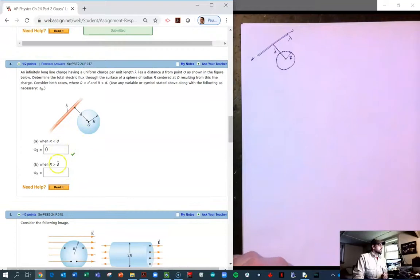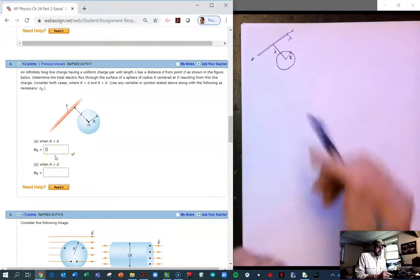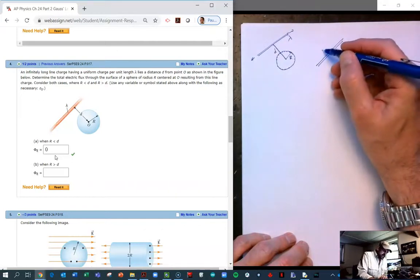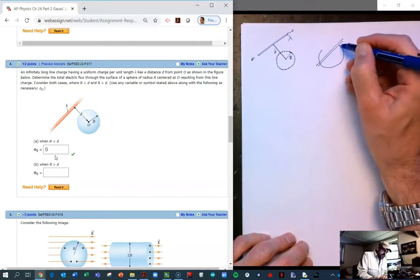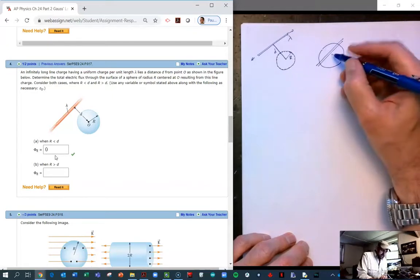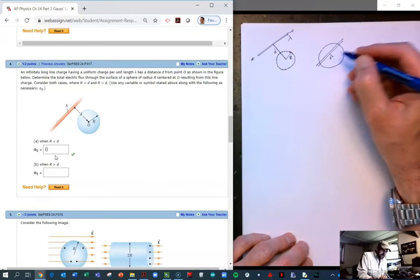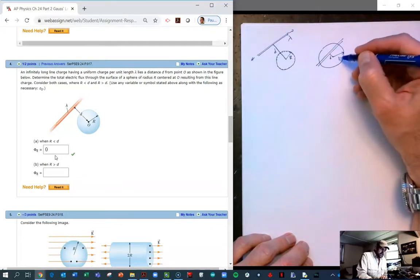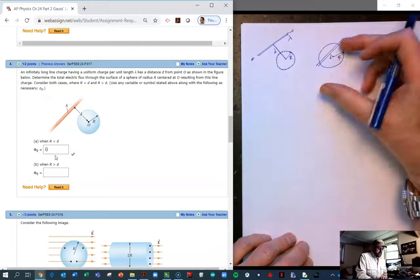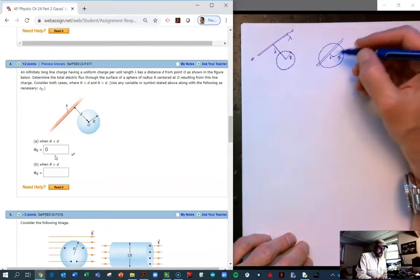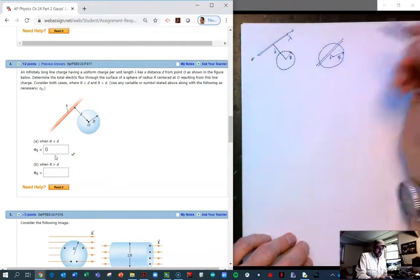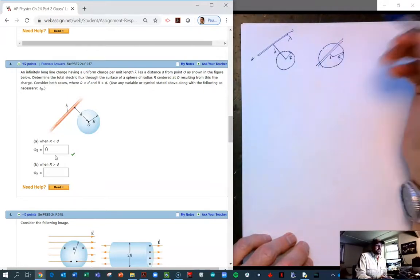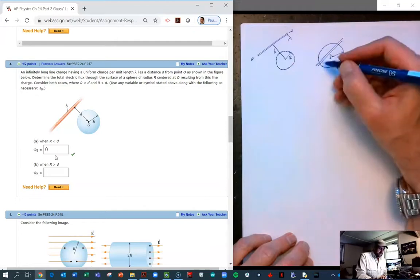And so now let's consider what happens if R is greater than D. Okay, so we've got our line of charge here, and now we consider a big - so this is D to the center of the sphere. Pardon me for not drawing this very well. But there's our big R. So now R is bigger than D. And so the idea here is the same. If we draw our Gaussian surface to be the sphere itself, then what is the charge enclosed in that sphere?